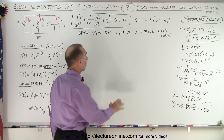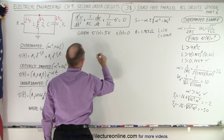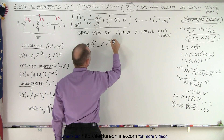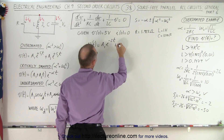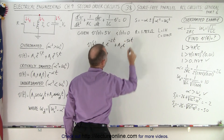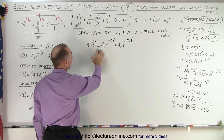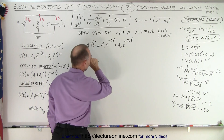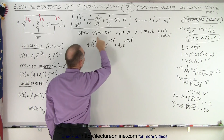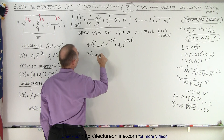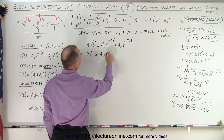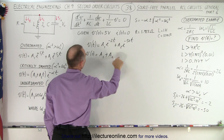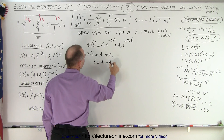Now we have the two values for our characteristic equation, so we can write that the voltage as a function of time equals A1 times e to the minus 2T plus A2 times e to the minus 50T. We still need to find A1 and A2. We're given the initial voltage at time zero is 5 volts. When T equals 0, the exponentials both equal 1, so V(0) equals A1 plus A2 equals 5 volts.